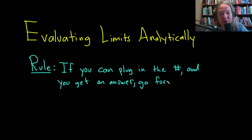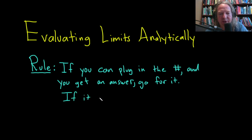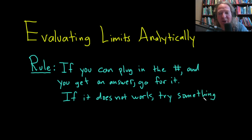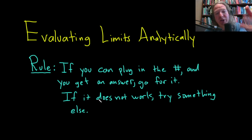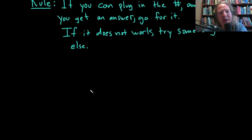By an answer I mean something that actually makes sense — you actually need to get a number. So if you get division by zero or something nonsensical, that's not going to work. You actually have to get a real number. If it doesn't work, try something else. And that's really what it's all about — what is that something else. In this lecture we're going to investigate different techniques for evaluating limits and do a bunch of examples, because I think that's the best way to learn calculus.